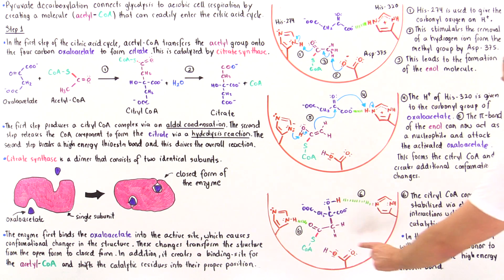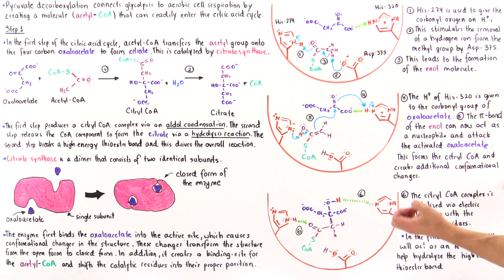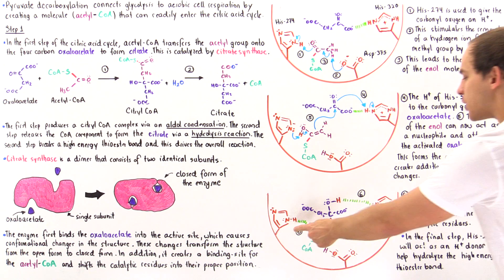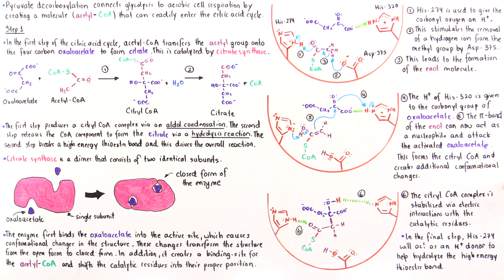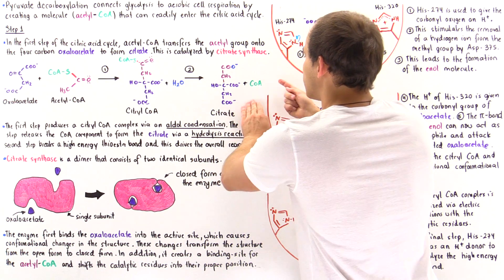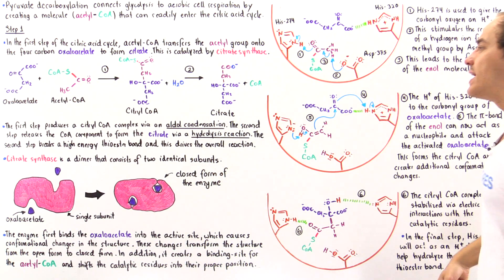we see that the histidine 274 will act as an H plus donor, giving that H ion onto this oxygen of the carbonyl group, which will stimulate the hydrolysis of the red bond to ultimately form the citrate molecule and release that coenzyme A.